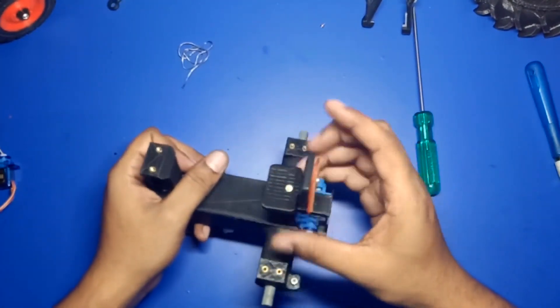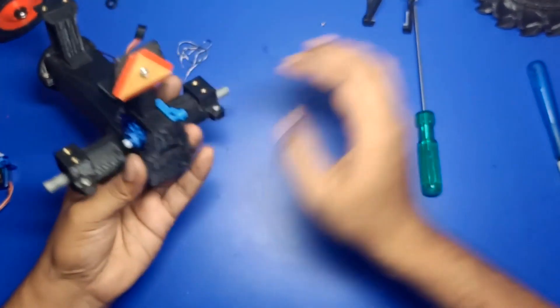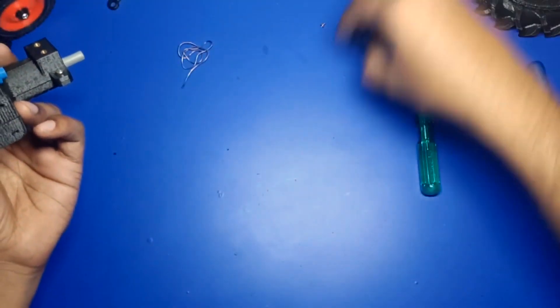This completes the installation of the seat. Next is the trolley holder.